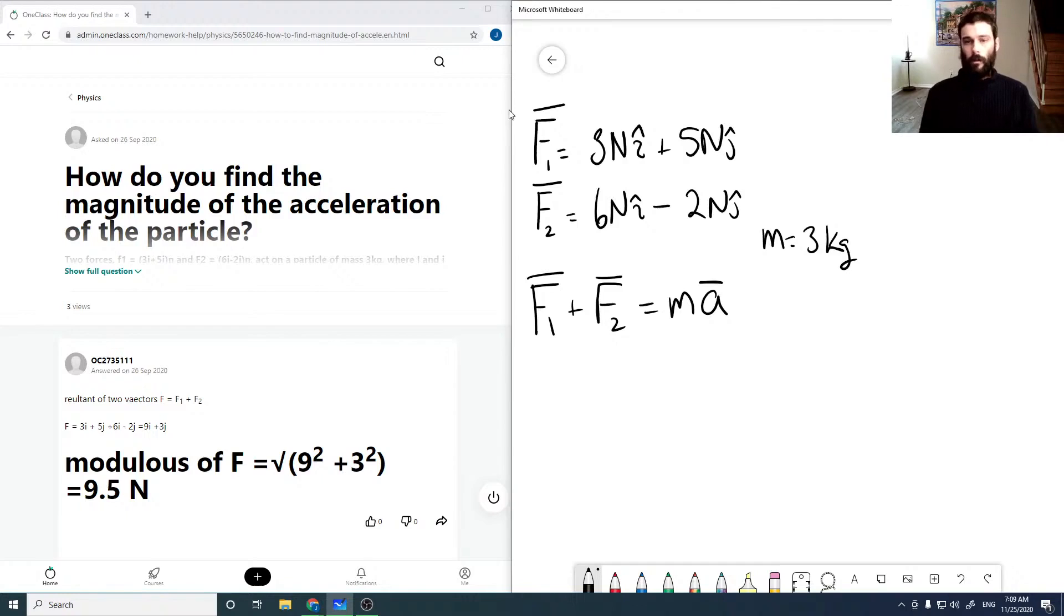So our force vectors can give us our acceleration vector. So our acceleration vector is 1 over m times F1 plus F2. And plugging in our values for our force vectors here, that would be 3 newtons i-hat plus 5 newtons j-hat plus 6 newtons i-hat minus 2 newtons j-hat.